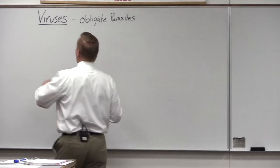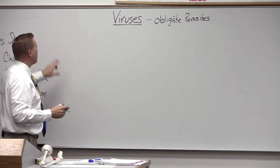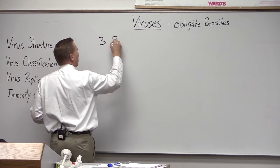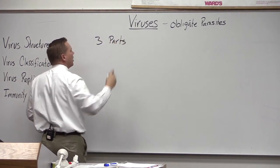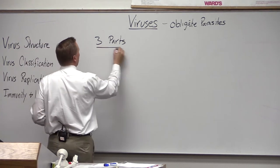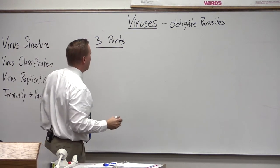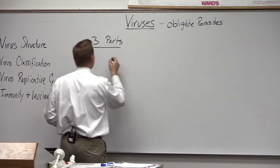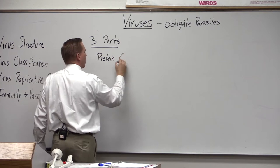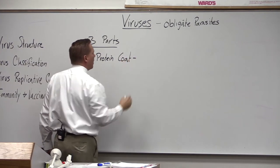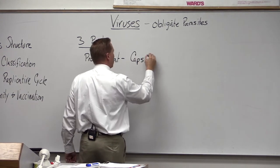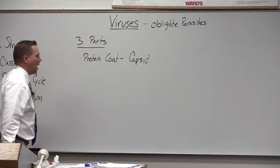A virus itself has a pretty simple structure. Viruses have basically three parts — really two parts, and then some of them have a third part. The first part is a protein coat, technically called a capsid. So the protein coat is called a capsid.